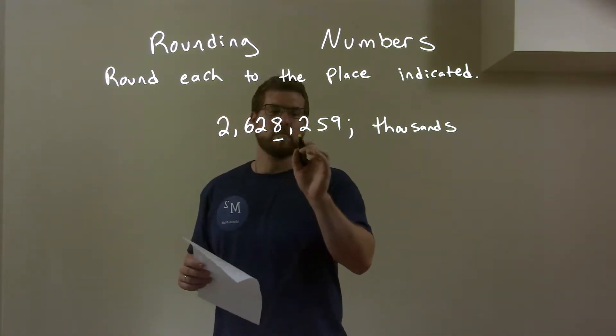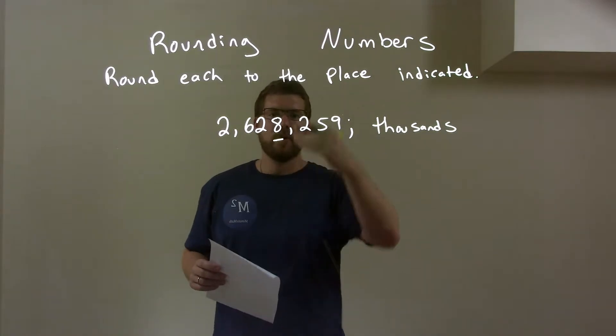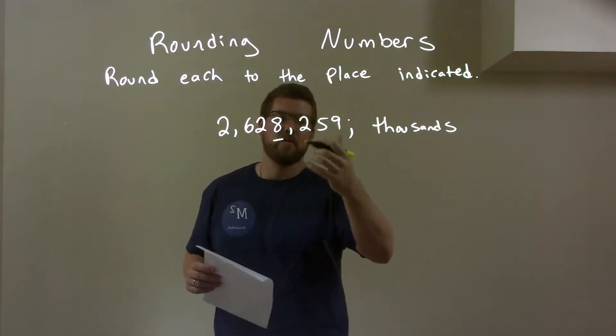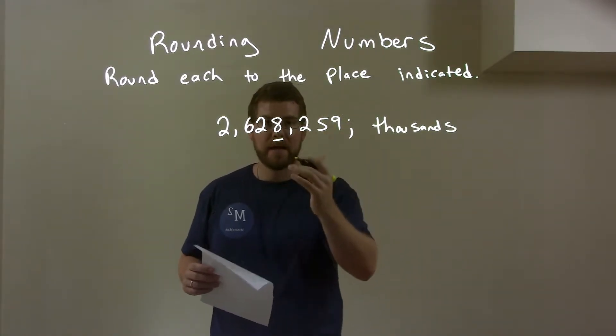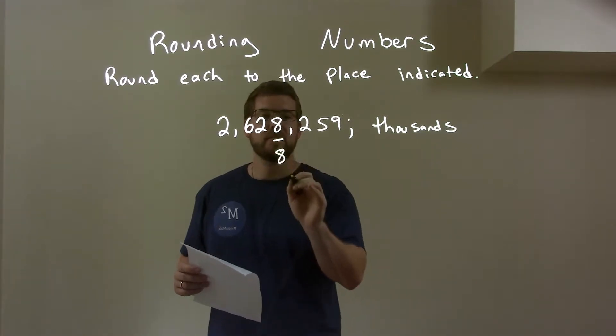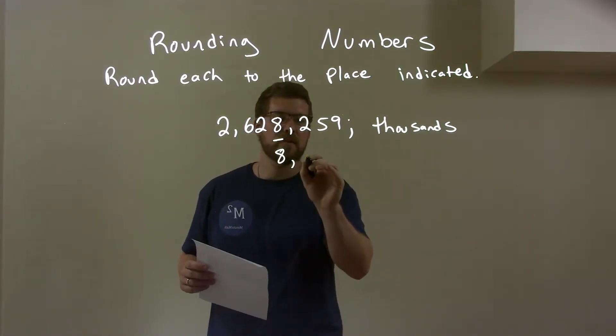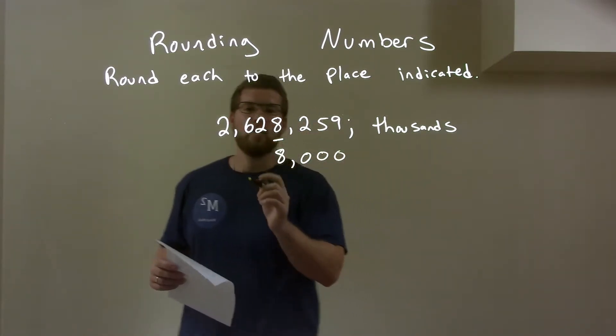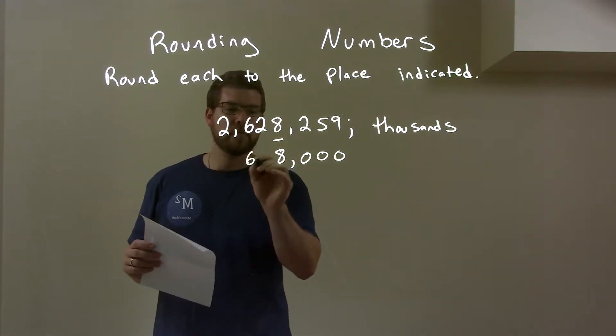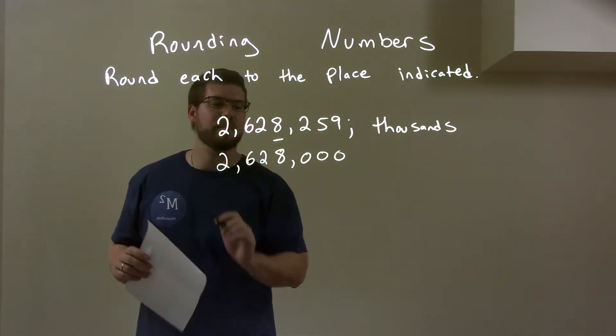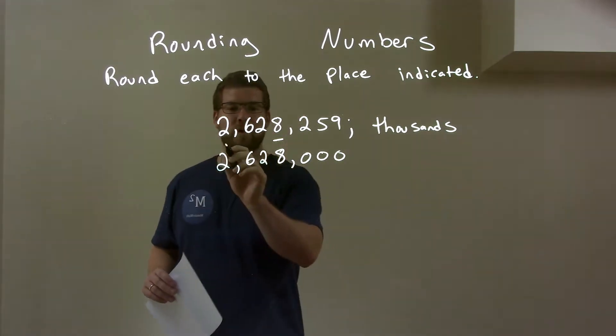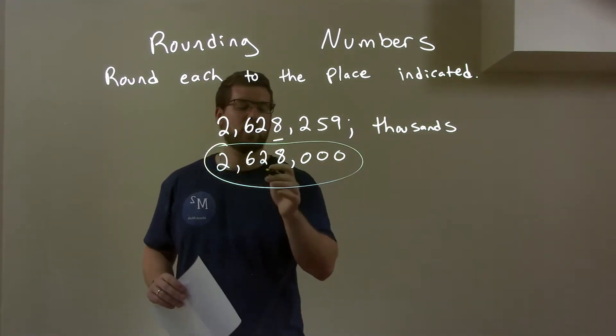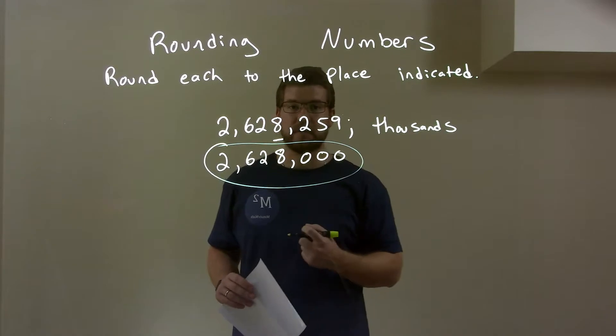So, what I do is I look to the right. The right of 8 is a 2, causing the 8 and everything to the right to round down. So, we're rounding down from there. The 8 stays the same, and the rest of these numbers become zeros. We then can just bring down the stuff to the left, 6, 2, and then we have a 2 out here. So, here we have our final answer of 2,628,000. And that's it.